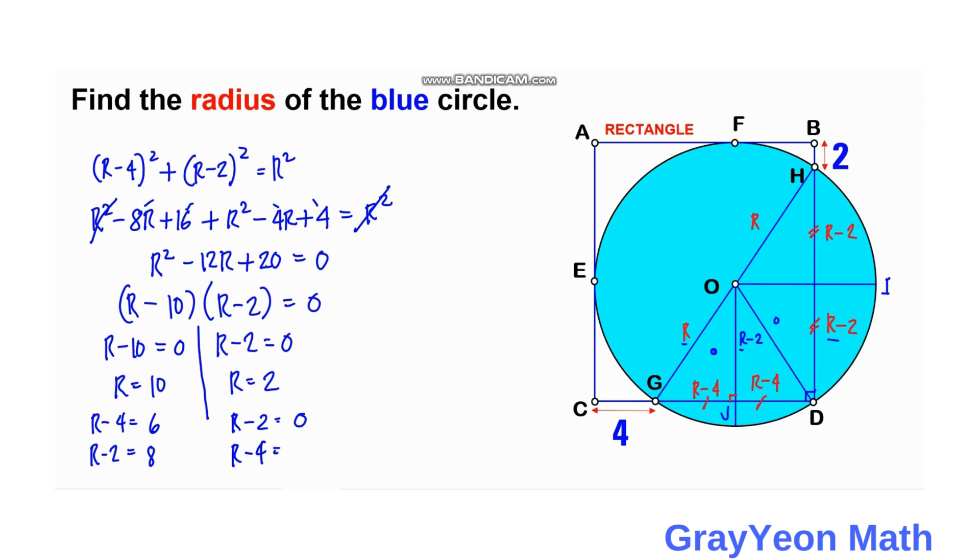And R minus 4, so 2 minus 4 this becomes negative 2. So this solution with 2 units gives us a 0 and negative, so this is invalid. And therefore the only answer is R is equal to 10, and that is our answer.